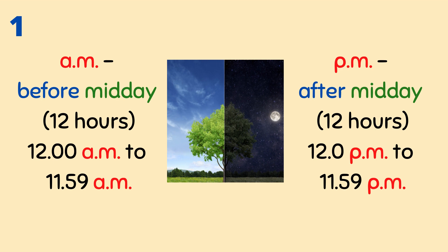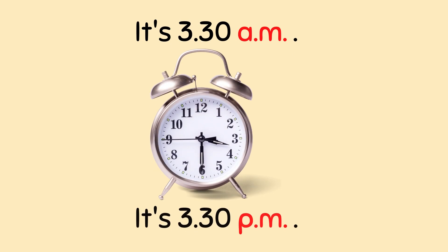AM represents times before midday, and PM represents times after midday. Since we have 24 hours, AM is used for the first 12 hours and PM for the other 12 hours. Sebelum tengah hari kita guna AM, bermula daripada tengah malam. Bila masuk tengah hari, kita tukar kepada PM sehinggalah 11:59 malam, baru kita tukar balik AM.